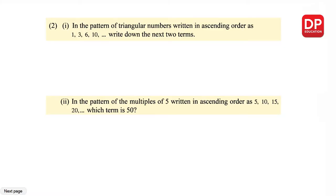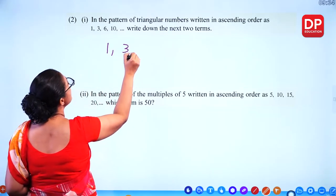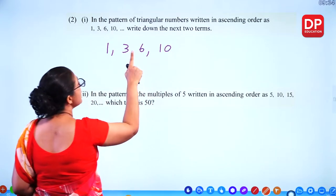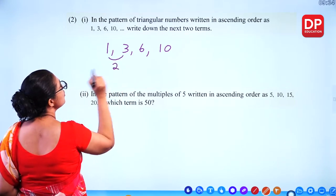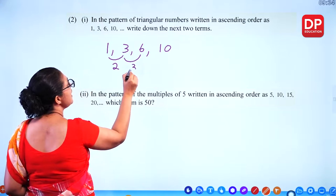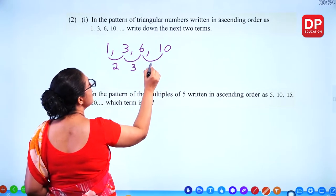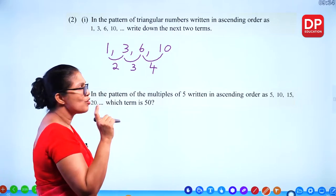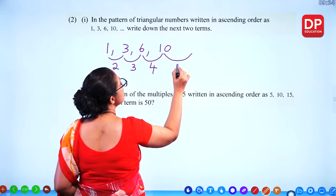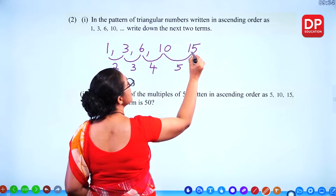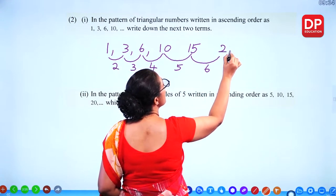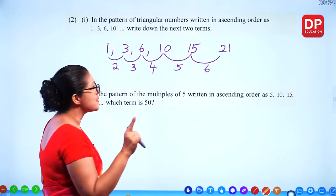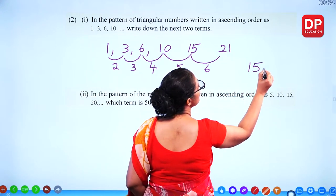Question number 2: in the pattern of the triangular numbers written in ascending order — 1, 3, 6, 10 — write down the next two terms. The gap increases: add 2 to get 3, add 3 to get 6, add 4 to get 10, add 5 to get 15, then add 6 to get 21. So the next two terms are 15 and 21.